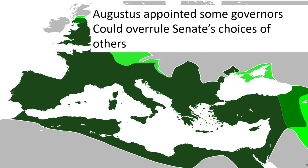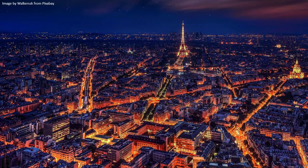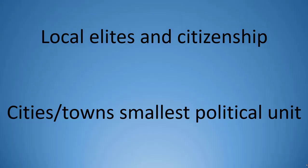Augustus claimed the power to appoint leaders of certain provinces of the empire, and while the Senate nominally had the power to appoint the remaining leaders, its choice could be overruled by Augustus. Rome ruled such a vast territory by working with local elites, normally located in cities and towns. These officials followed Rome's orders and kept the peace in return for Roman citizenship, making cities and towns the smallest political unit in the empire.